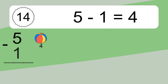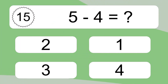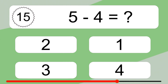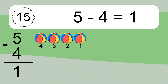5 minus 1 equals what? 5 minus 1 equals 4. Let's count it: 4. 5 minus 4 equals what? 5 minus 4 equals 1. Let's count it: 4, 3, 2, 1.